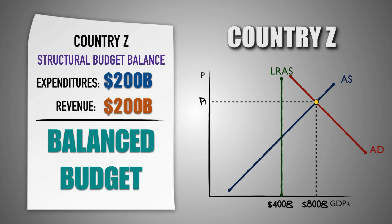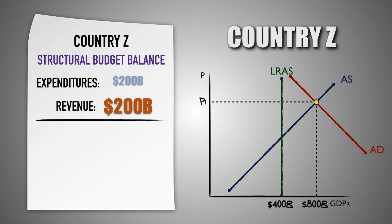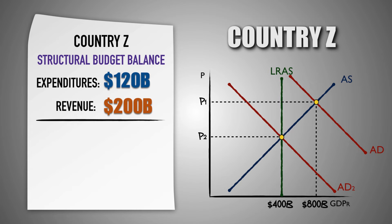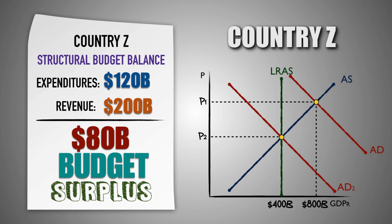For example, suppose that the economy of country Z is experiencing a $400 billion inflationary gap, the marginal propensity to consume is 0.8, and the budget is balanced. If the government passes fiscal restraint that decreases its spending by $80 billion, it would decrease aggregate demand and reduce real GDP output by $400 billion, returning the economy to full employment. Even if the government doesn't change tax policy, this policy would create an $80 billion budget surplus in country Z because the government has reduced its expenditures.